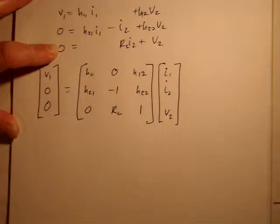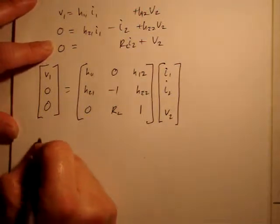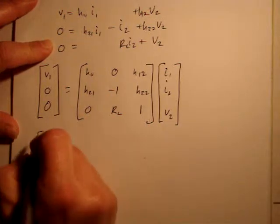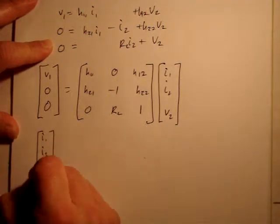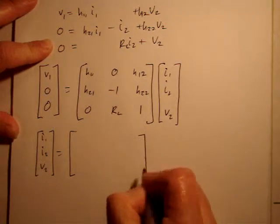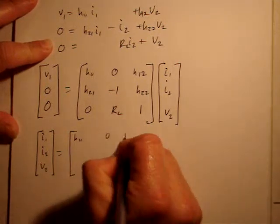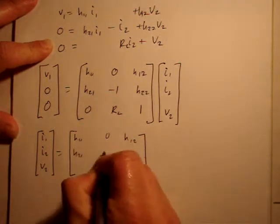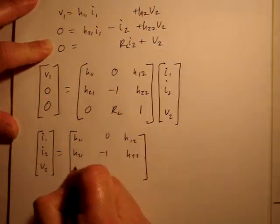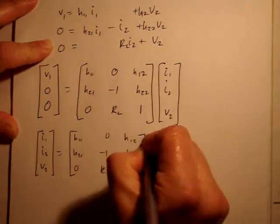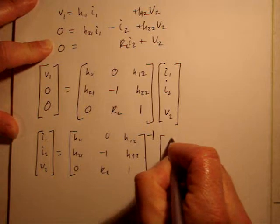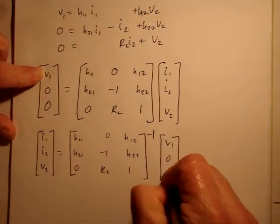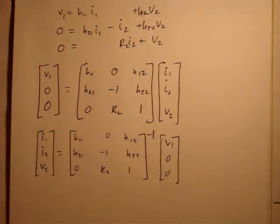So now, we can solve for our variables we're looking for. I1, I2, V2 equals inverse of this matrix: H11, 0, H12, H21, negative 1, H22, 0, RL, 1, inverse times our B, which is just V1, 0, 0. So, I'll stop there with the hint and let you continue on for solving this problem.